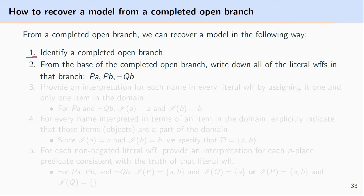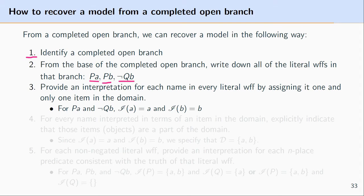The next step is to start from the base of the completed open branch and work your way up through the branch, writing down all the literal well-formed formulas in that branch. So let's just imagine we had a branch that contained the literal well-formed formulas PA, PB, and not QB. The next part of constructing a model from this completed open branch is to give an interpretation for each of the names in that branch. We have two names — A and B — and we'll want these names to designate some item in the domain.